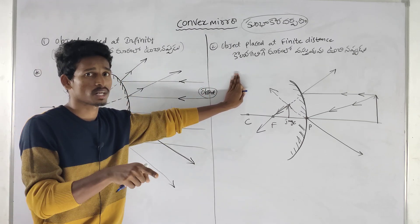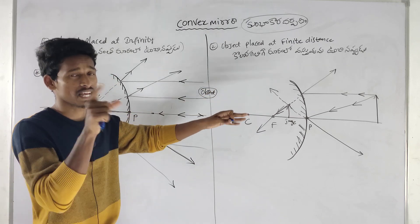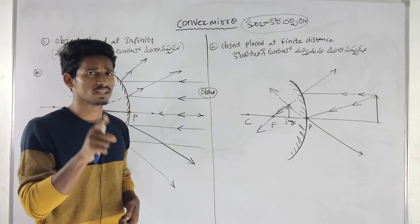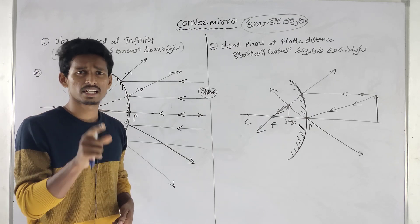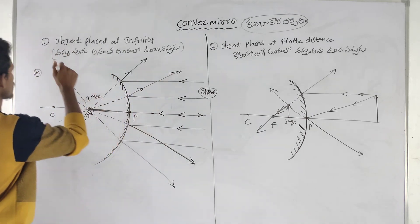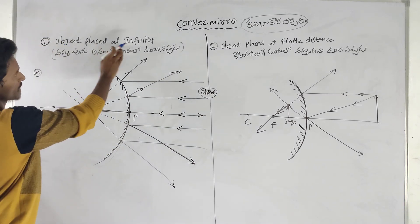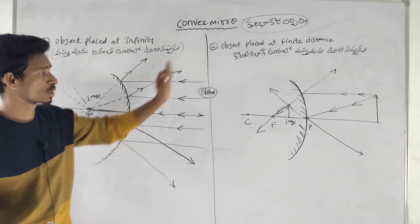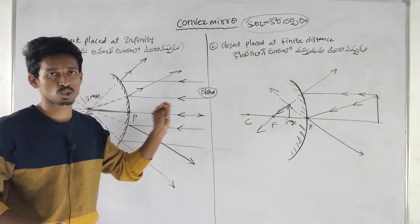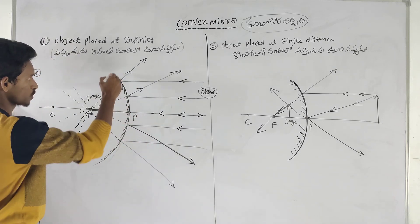For the concave mirror, we call it six cases — those were covered in the last video, and there is a link in the description. First of all, for the convex mirror, we have two cases.